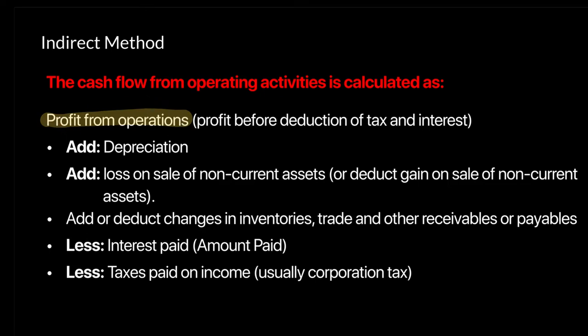How should we adjust this figure? First, we need to remove all non-cash expenses. By non-cash I mean depreciation. We also need to remove items like depreciation, loss on sale, and gain on sale. Losses and gains are non-cash because when calculating a loss or gain you're comparing the selling price of an asset with its net book value. Net book value is an accounting value — it has nothing to do with actual cash value. It's a loss realized because the book value differs from the market value.